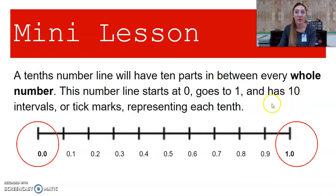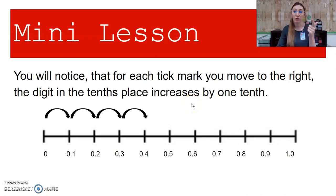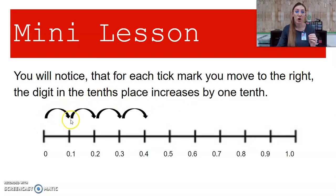A tenths number line will have ten parts in between every whole number. This number line starts at zero and goes to one and has ten intervals or tick marks representing each tenth. You'll notice that for each tick mark you move to the right, the digit in the tenths place increases by one-tenth. So just like our normal counting numbers — one, two, three, four, five — our number line will follow that same pattern, but because we're working in tenths, we would say one-tenth, two-tenths, three-tenths, four-tenths.